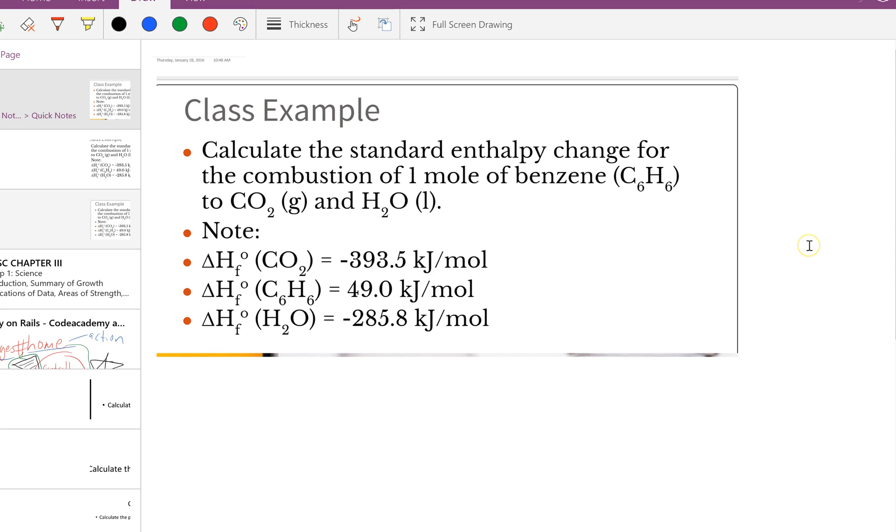The first thing we do is write out the actual equation. We are combusting benzene to form carbon dioxide and water. That means the reaction is C6H6 plus O2 goes to CO2 plus H2O. You can include the states of matter, but for now, this is what I'll stick to.